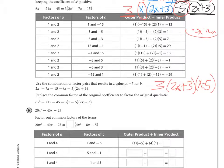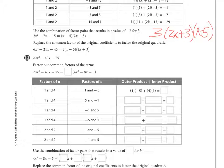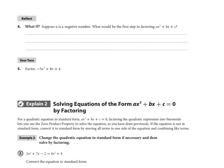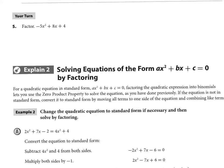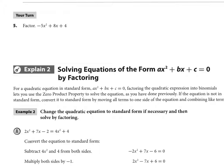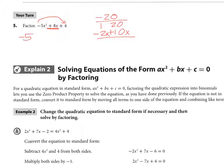Now for the 'your turn' problem, I'm going to use a similar method. Multiply 'a' times 'c', which gives negative 20. List factors that give a sum of 8: 1 and 20 doesn't work, but 2 and 10 will — I need a positive 8, so that's positive 10 and negative 2. Replace the middle term with negative 2x and positive 10x, giving: negative 5x² − 2x + 10x + 4.